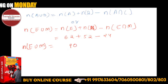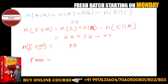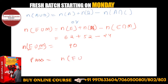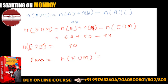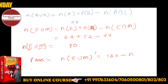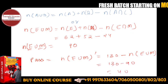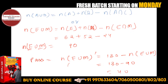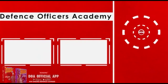Now, what we need to find is the passed students, which is the complement: N of E union M complement, that means Total minus N of E union M, which is 130 minus 90, giving us 40. So 40 is the number of students who passed. Let's move on.